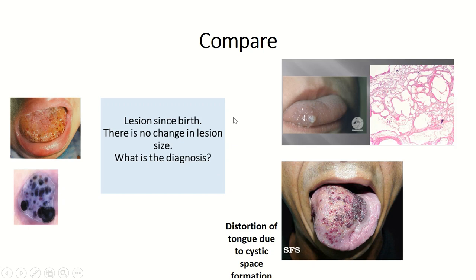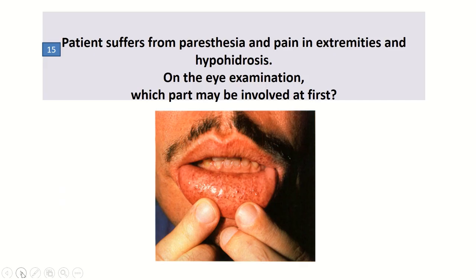Comparing lymphangioma circumscriptum and angiokeratoma: angiokeratoma manifests with dark red papules and macules, while lymphangioma circumscriptum is typically a vesicular eruption. The distinguishing feature is distortion of the tongue due to cystic space formation in lymphangioma circumscriptum.